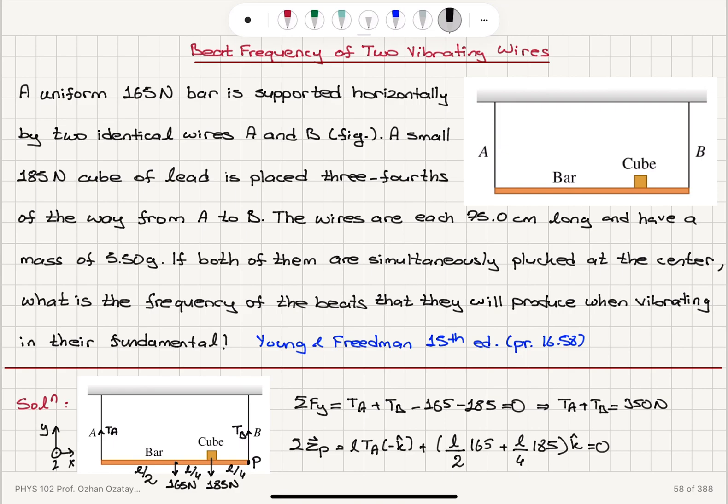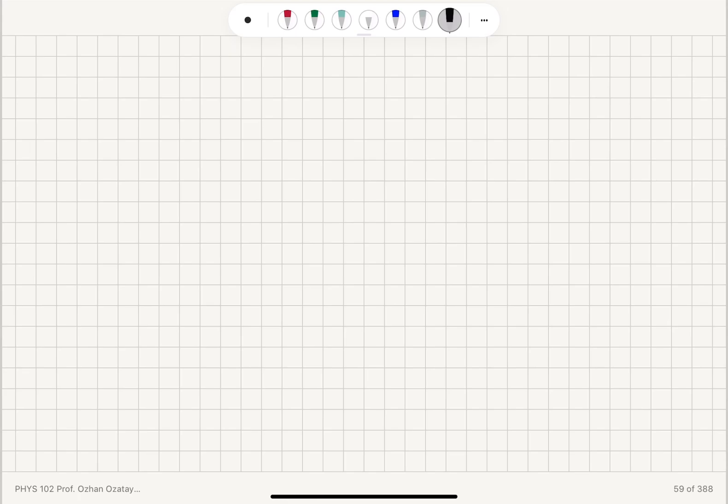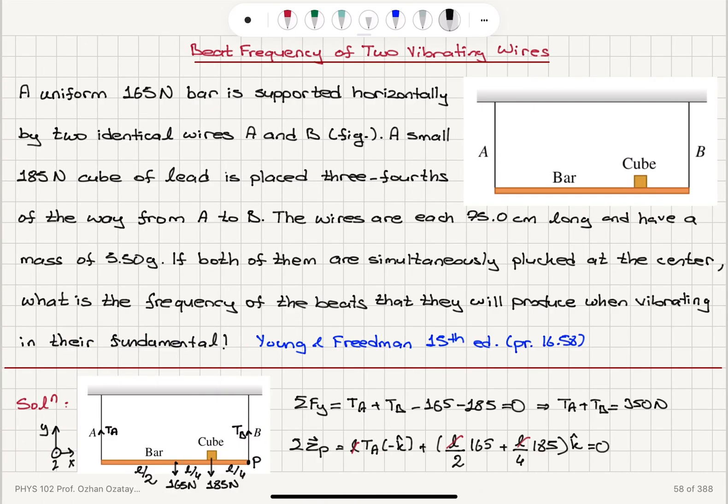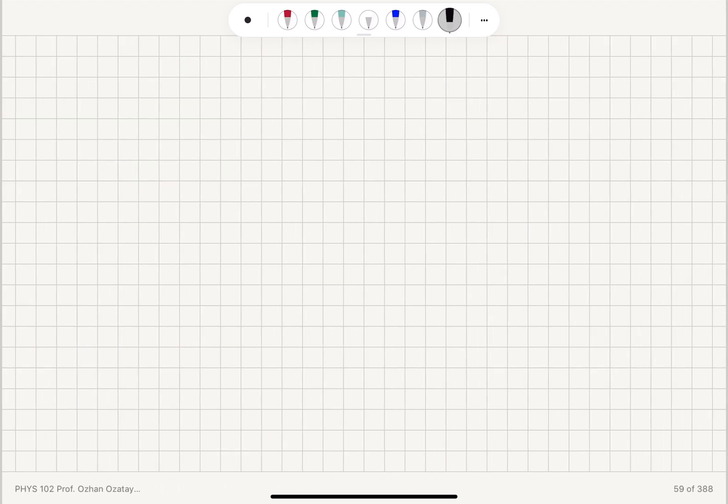So L's will cancel here. And we will find that T_A, if we take this T_A to the right-hand side, T_A will be equal to 165 divided by 2 plus 185 divided by 4.